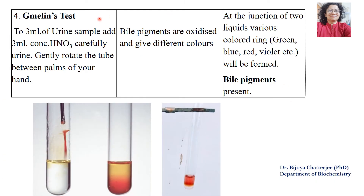The next test is Gmelin's test. We take 3 ml of urine sample and gently add 3 ml of concentrated nitric acid along the sides of the tube. The tube is then rotated between the palms. If bile pigments are present, they will be oxidized to give different colours — green, bluish, red or violet — at the junction of the two liquids, indicating the presence of bile pigments.